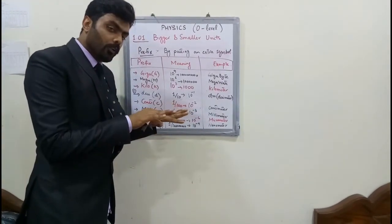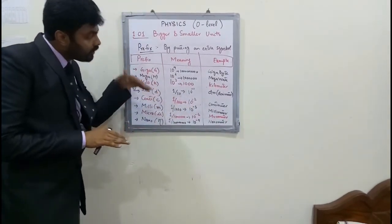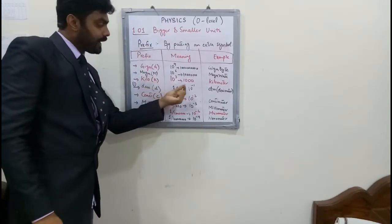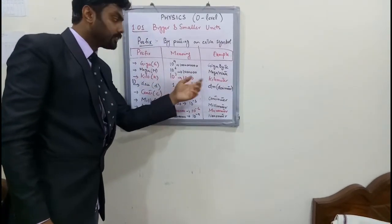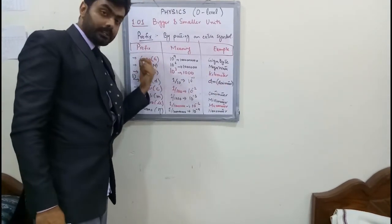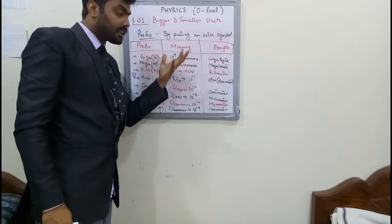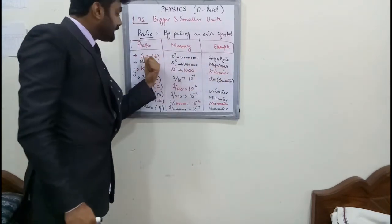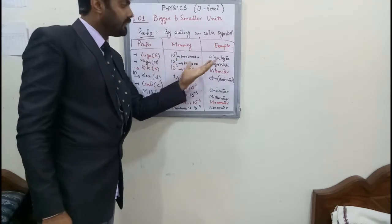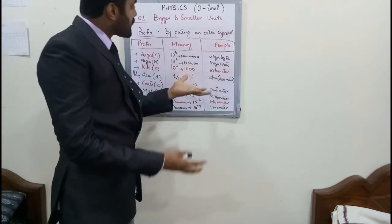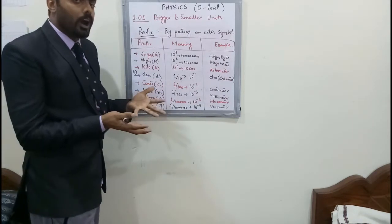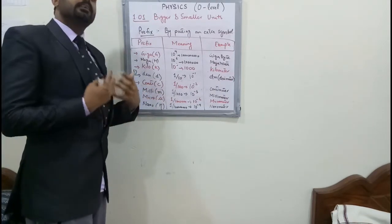Now for the bigger units: kilo is 10 to the power 3, meaning one thousand, example kilometers; mega (capital M) is 10 to the power 6, example megawatt; and giga (G) is 10 to the power 9, example gigabyte. These are the prefixes used to make units bigger or smaller.